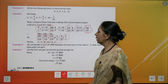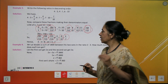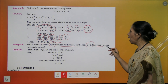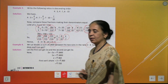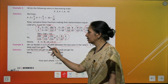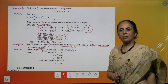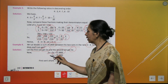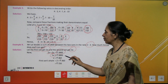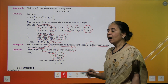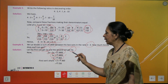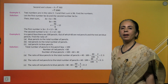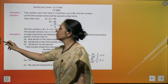Now let's take a real-life example. Mr. Lal divides a sum of rupees 1800 between his two sons in the ratio 2 ratio 3. How much money does each son get? Let the first son get 2x and the second get 3x. Then 2x plus 3x equals rupees 1800. So 5x equals 1800, giving x equals rupees 360. First son's share: 2 times 360 equals rupees 720. Second son's share: 3 times 360 equals rupees 1080.